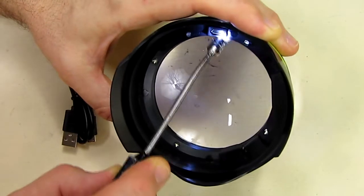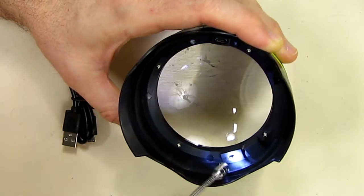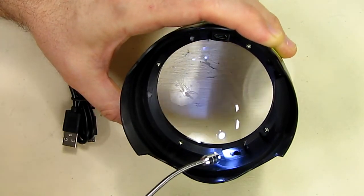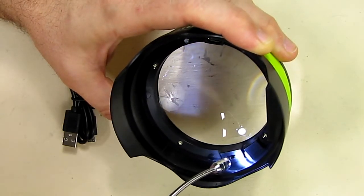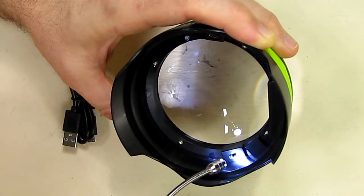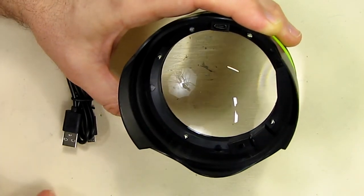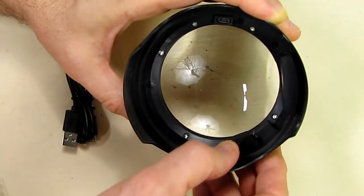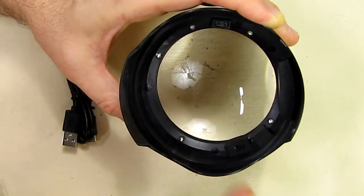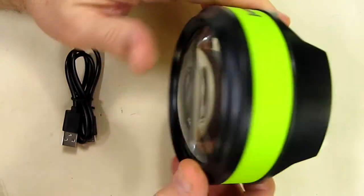And on almost the opposite side of that charging port is a little micro switch right there, and it has an off and an on position. When you're not using this unit, put it in the off position, and what is really nice about having that switch right there is that when you're not using it, it's not going to use energy from the battery.